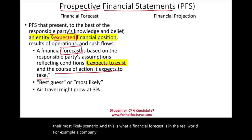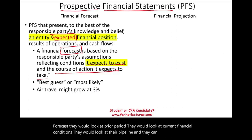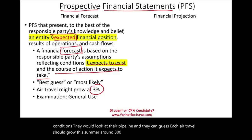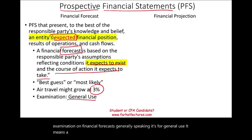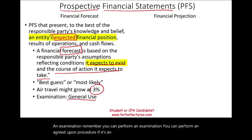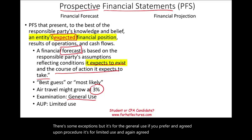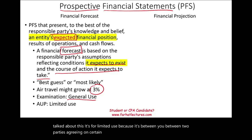In the real world, for example, an airline company might forecast that air travel will grow at 3%. They would look at prior periods, current financial conditions, their pipeline, and guess that air travel should grow around 3% this summer. If we perform an examination on a financial forecast, generally speaking, it's for general use. If you perform an agreed-upon procedure, it's for limited use — because it's between two parties agreeing on certain terms, and third parties should not be involved.